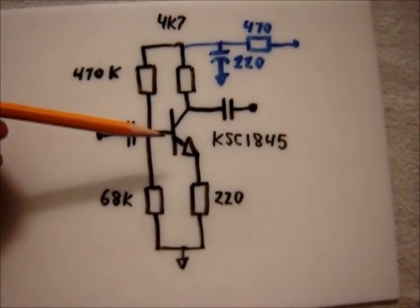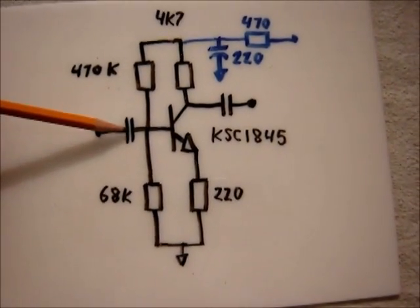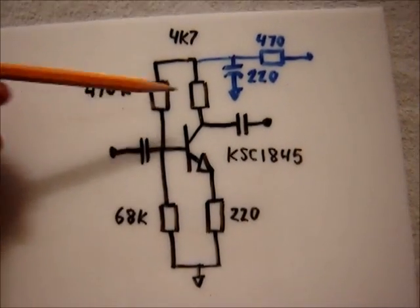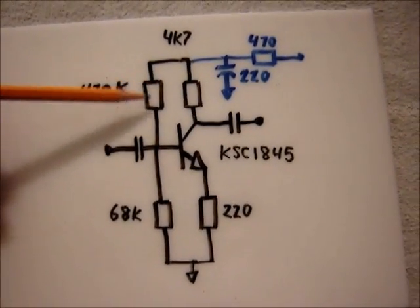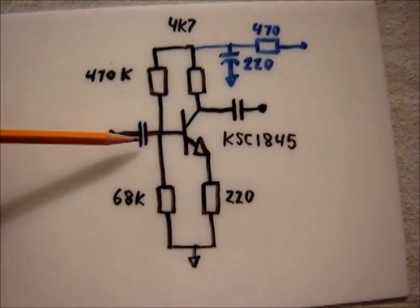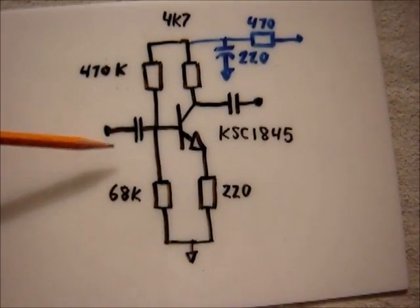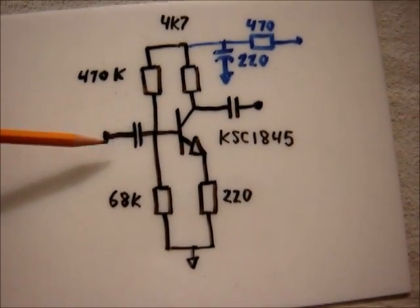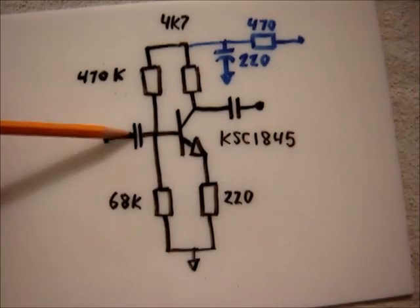And I should mention the capacitors here. Now this is a sensitive circuit. It's got bias voltages and currents flowing through it. You don't want to connect something and disturb those, so you block any DC currents that could enter or leave the circuit using capacitors.